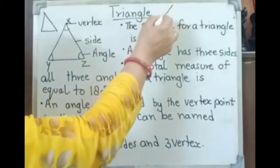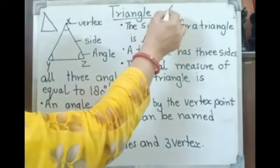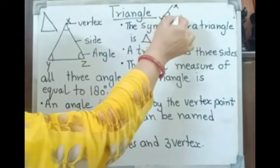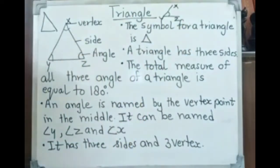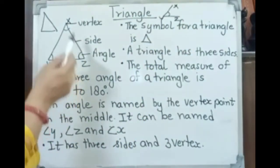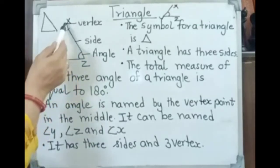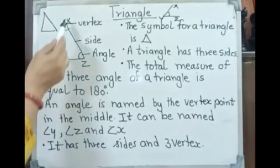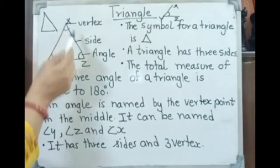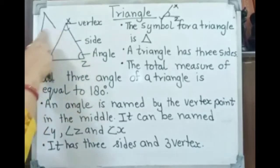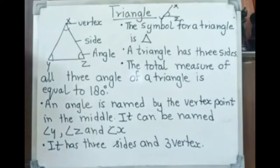Here we have this triangle with angle X, Y, Z. When it is a triangle, we have angle Y, angle Z, angle X — three vertices X, Z, Y — and three sides XZ, ZY, and YX. So, this is the definition of a triangle.